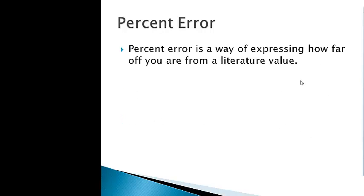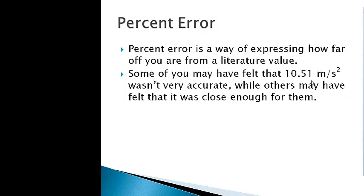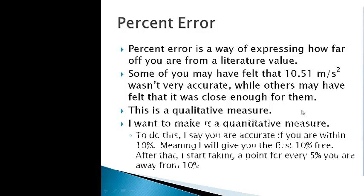Now, percent error is just going to be a way of expressing how far off you are from a literature value. Some of you may have been looking at that 10.51, and when I said I'm going to say that they are accurate, some of you may have looked at that and said, I don't know if that's close enough for me. And if it's not close enough for you, someone else might say, I think it's pretty close. Well, the thing is, who's right when you're saying it's close or it's not close? See, those are qualitative measures. Those are things that are argumentative. It's someone's opinion. And that's where science has a problem with opinions being correct. To make something better or better data, it's important to have a quantitative measure, and that's what percent error does. It allows you to take a number or a measure and express it numerically.